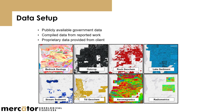A common problem with public data is that some of it is point data, some is qualitative polygons, and some is line data. All of that has to be made into numeric values that can be fed into the AI. So there's a lot of setup that actually goes into the work before you get to do the fun part of creating the prospectivity map.